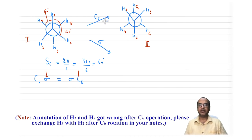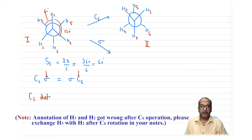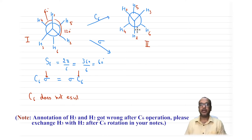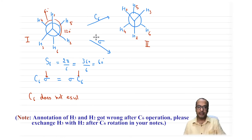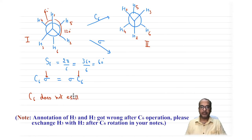Comparing the original configuration (molecule 1) to the result after C6 (molecule 2), they are not equivalent. Therefore, we conclude that C6 does not exist as an independent symmetry element in staggered ethane. Now let us apply σ.